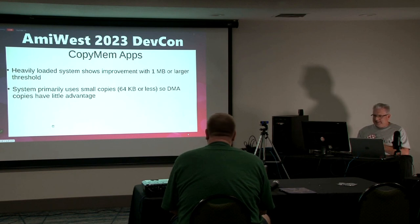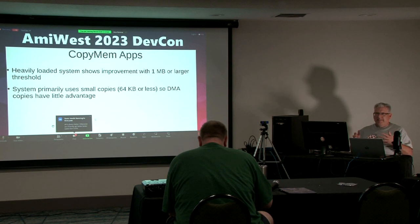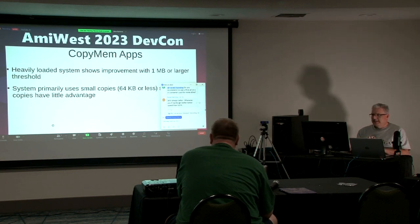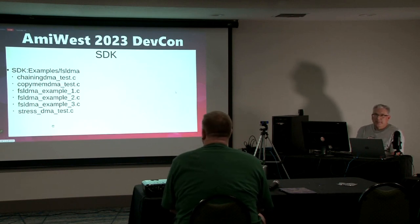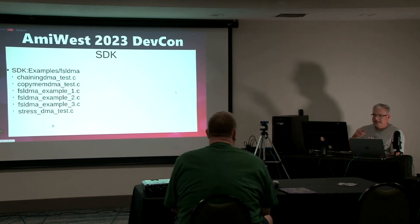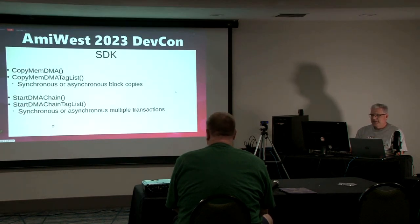One of the nicer features Jamie added at the end was chaining, where you can chain multiple different transactions into one big transaction. You take a bunch of little ones, chain them all up, and submit one big transaction to the DMA hardware. That's when you get a lot of bang for your buck — you queue up small things and make one big copy. The SDK you can download today has all the examples showing exactly how to use the API, with an example for everything including a stress test and a copy benchmark. It's very feature-complete.